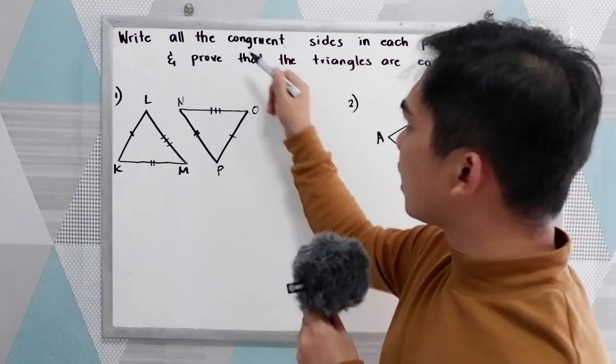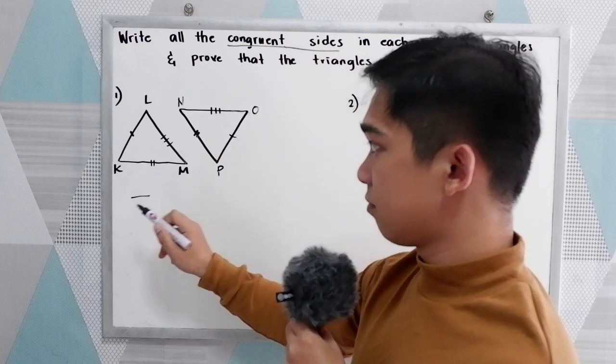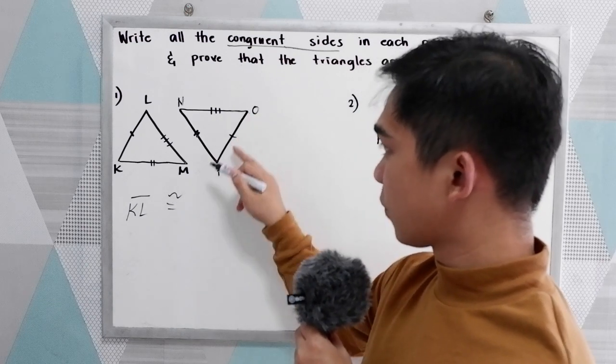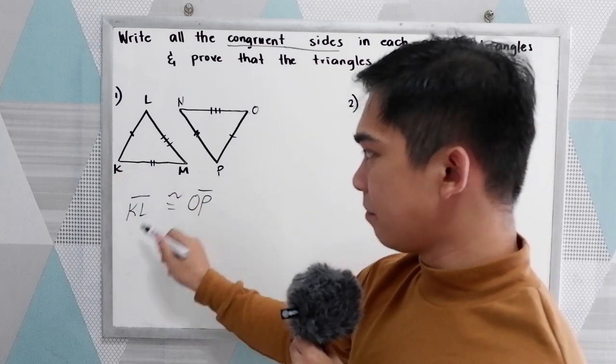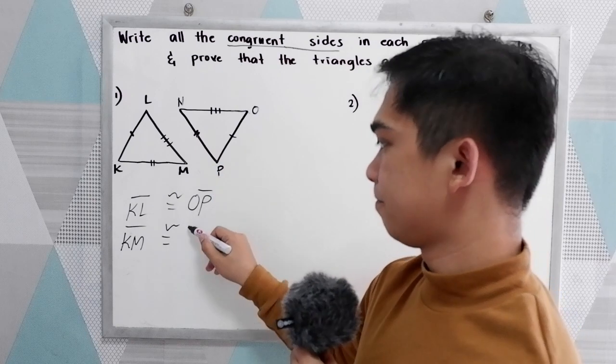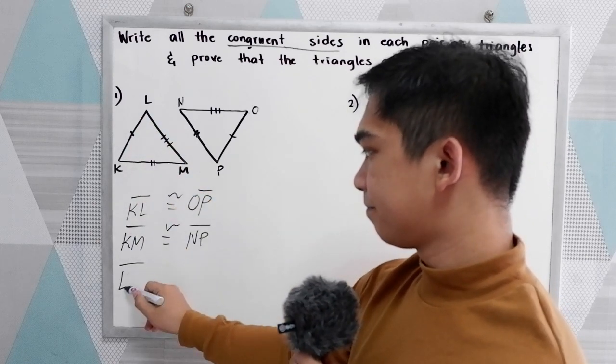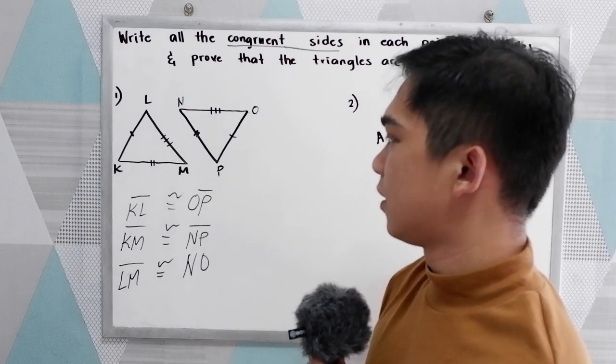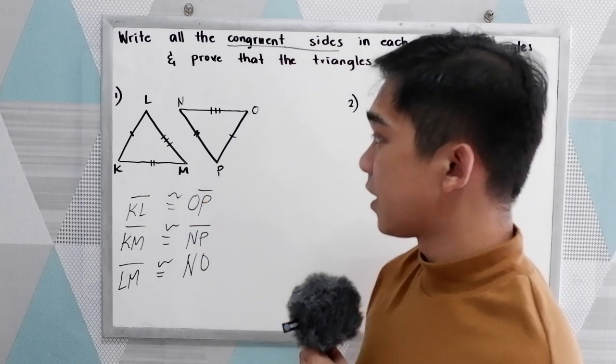We are going to write all the congruent sides. So, let's start with KL is congruent to OP. Next, second, KM is congruent to NP. And last, LM is congruent to NO. These are the congruent parts of our triangle or the congruent sides in our triangles.